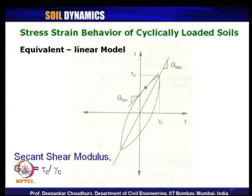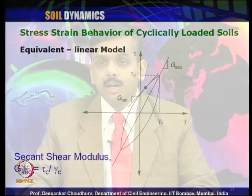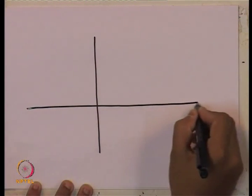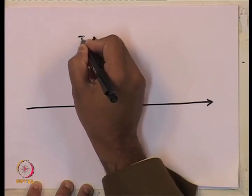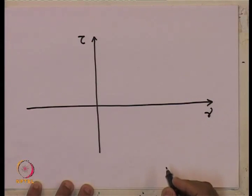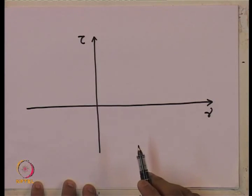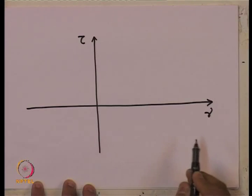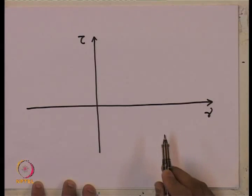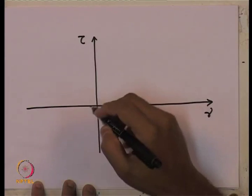Coming to today's lecture: let us discuss what we can obtain from laboratory tests in the second category — sample tests at high strain level. Suppose we conduct a cyclic triaxial test or cyclic simple shear test in the laboratory. The output we obtain from the test is shear stress versus shear strain — tau is shear stress and gamma is shear strain — measuring how shear stress develops for different cyclic shear strain levels.